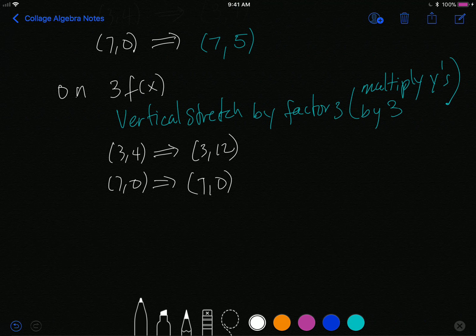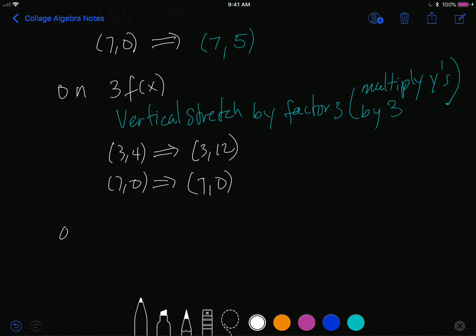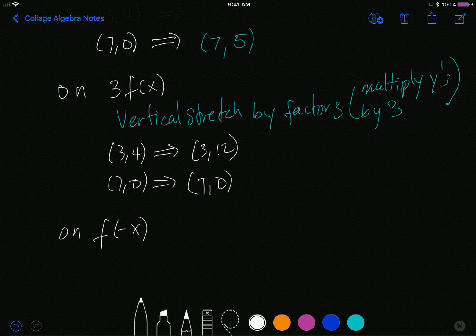One last example. Let's say I want to transform f(x), and then I have f(-x). That minus sign on the x means to multiply the x values by negative 1. It represents a reflection over the y axis.